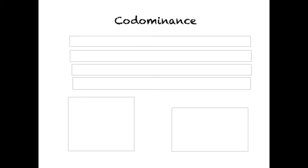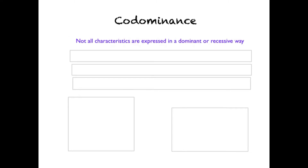Up until now we've been looking at Mendel's work, where we understand there is a dominant and a recessive characteristic influencing the phenotype. An individual with a dominant allele will always show the dominant characteristic, and an individual that is homozygous for the recessive characteristic will always show the recessive characteristic. What we're going to look at today is something a little bit different — we've come to the discovery that not all characteristics are expressed in a dominant or recessive way.